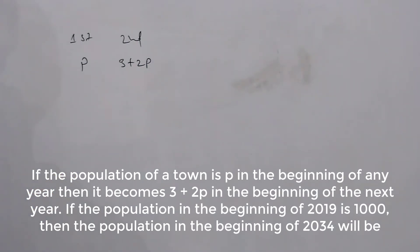If the population in the beginning of 2019 is 1000, then the population in the beginning of 2034 will be what? So population of 2019 is given as 1000 and we need to find the population in 2034.